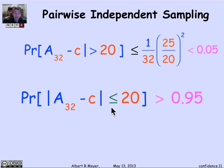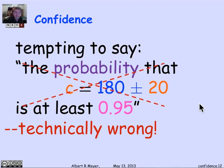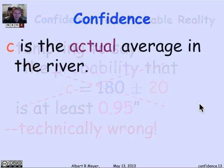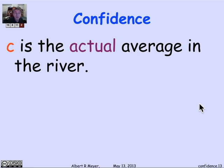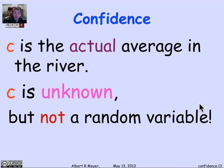We should go back and tell the EPA that the probability that C is less than 200 is 0.95. We'd be pretty tempted to say that, but it's not right — it's technically the wrong thing to say. We're talking about something other than probability here; we're talking about confidence, not probability. The number C is a number in the real world — it's an actual physical quantity, the average CMD in the river. We don't know what it is, but that does not make it a random variable. It either is or isn't less than 200.